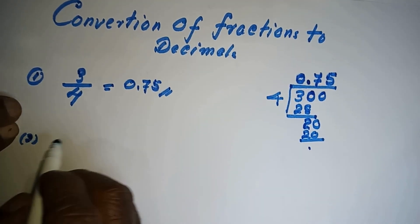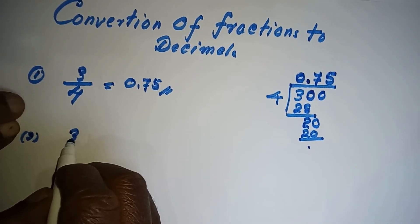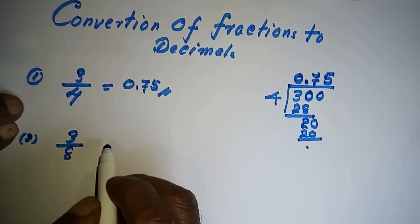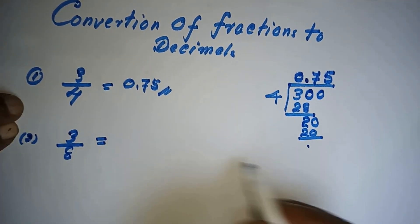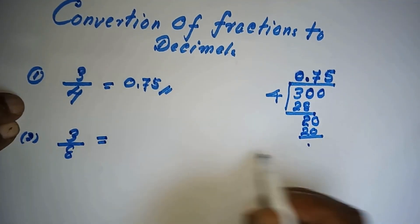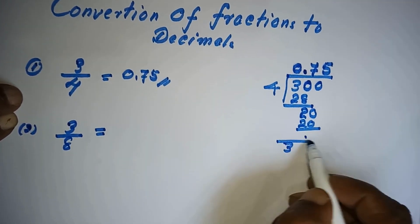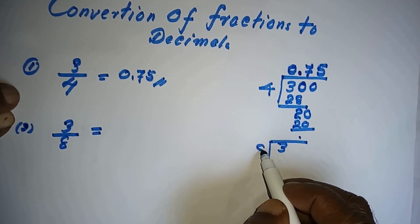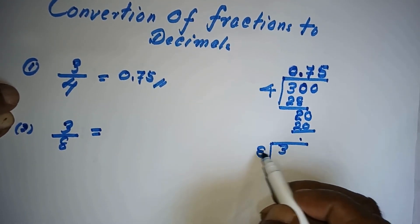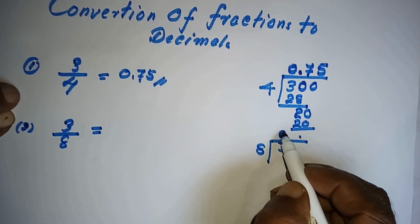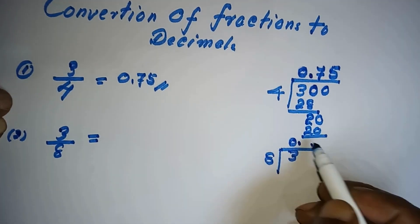Say 3 over 8. This also you have to divide. You have to divide 3 by 8. Now for 3, there's no eights there, so we have to put 0, now decimal beginning.